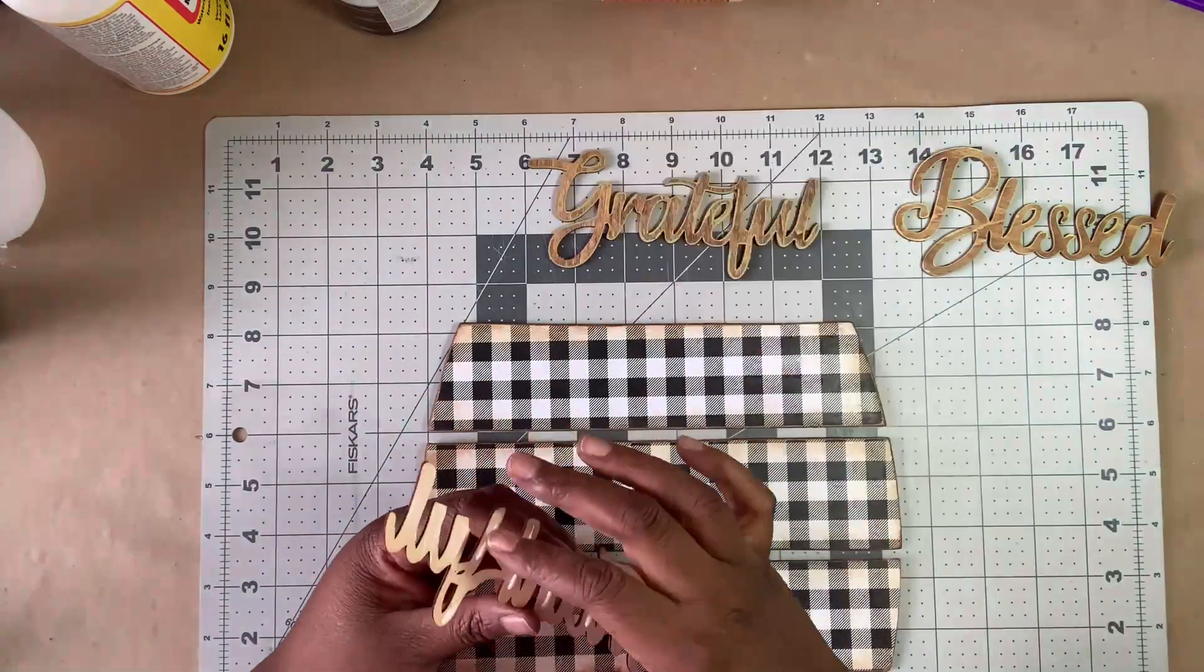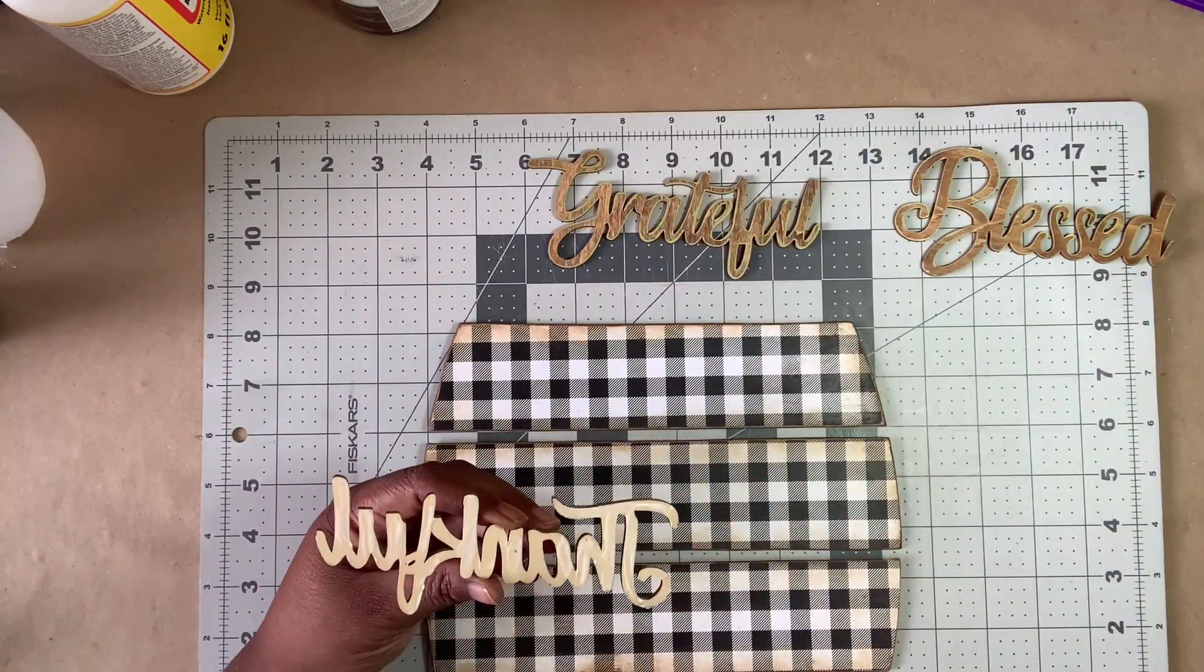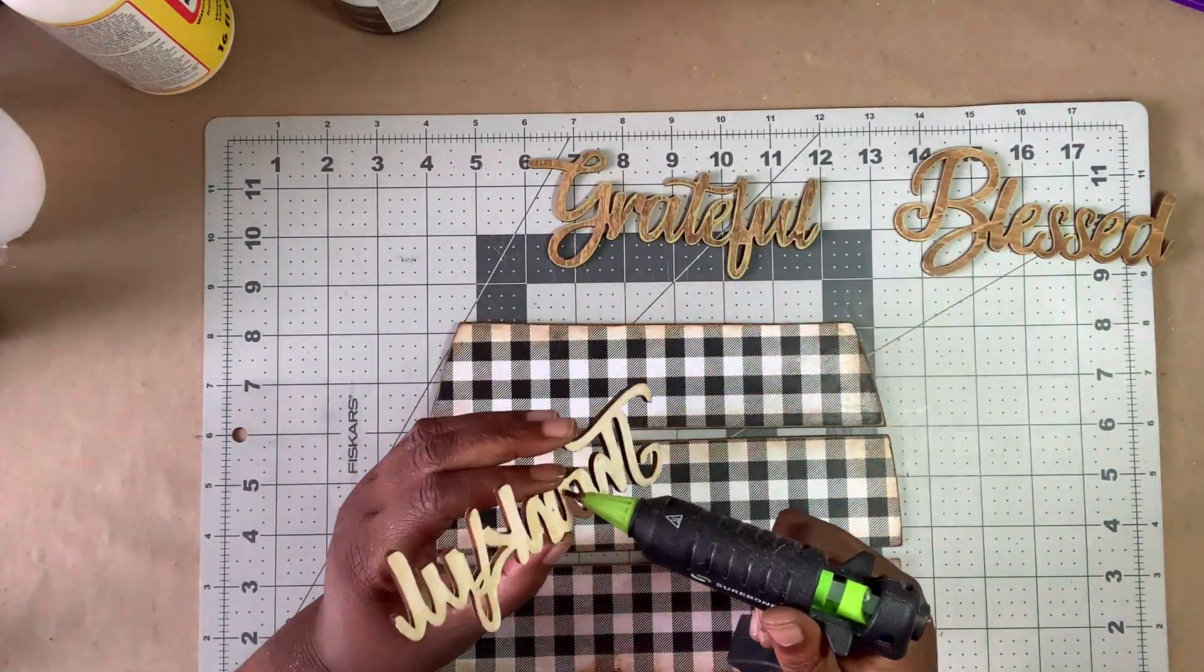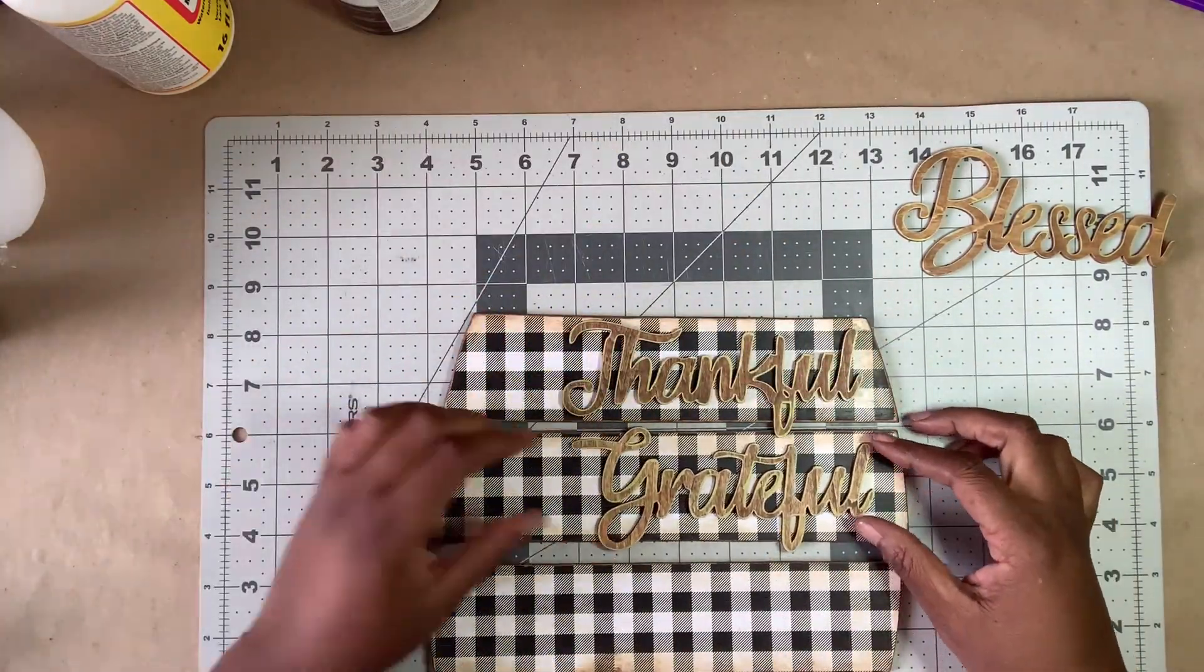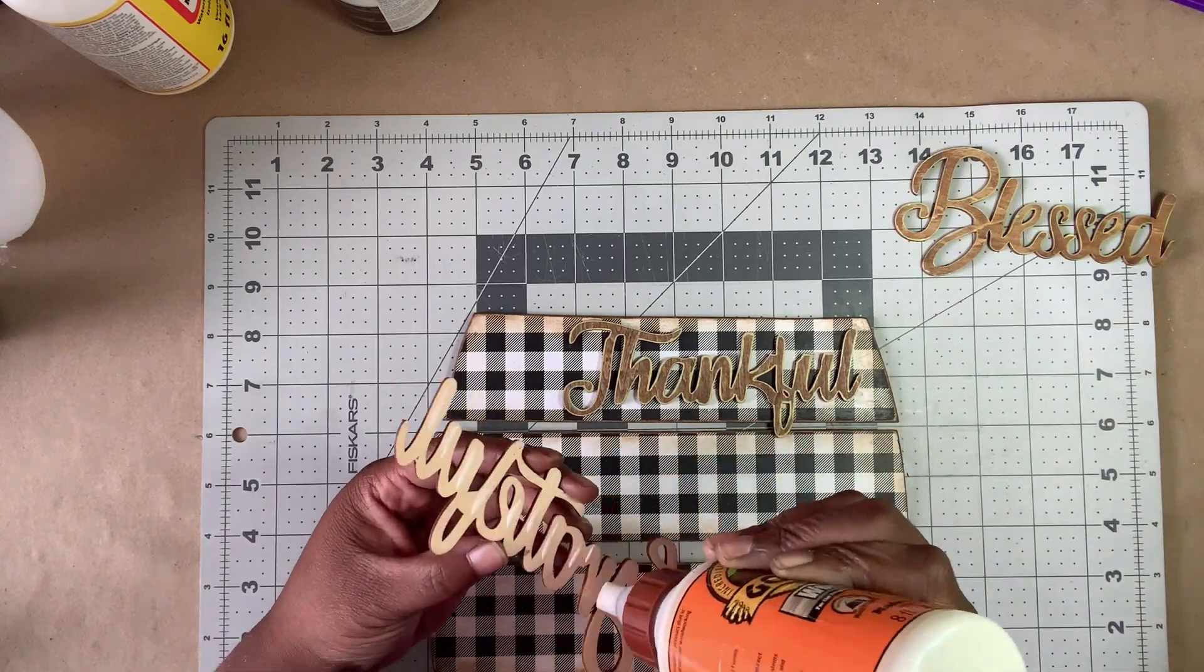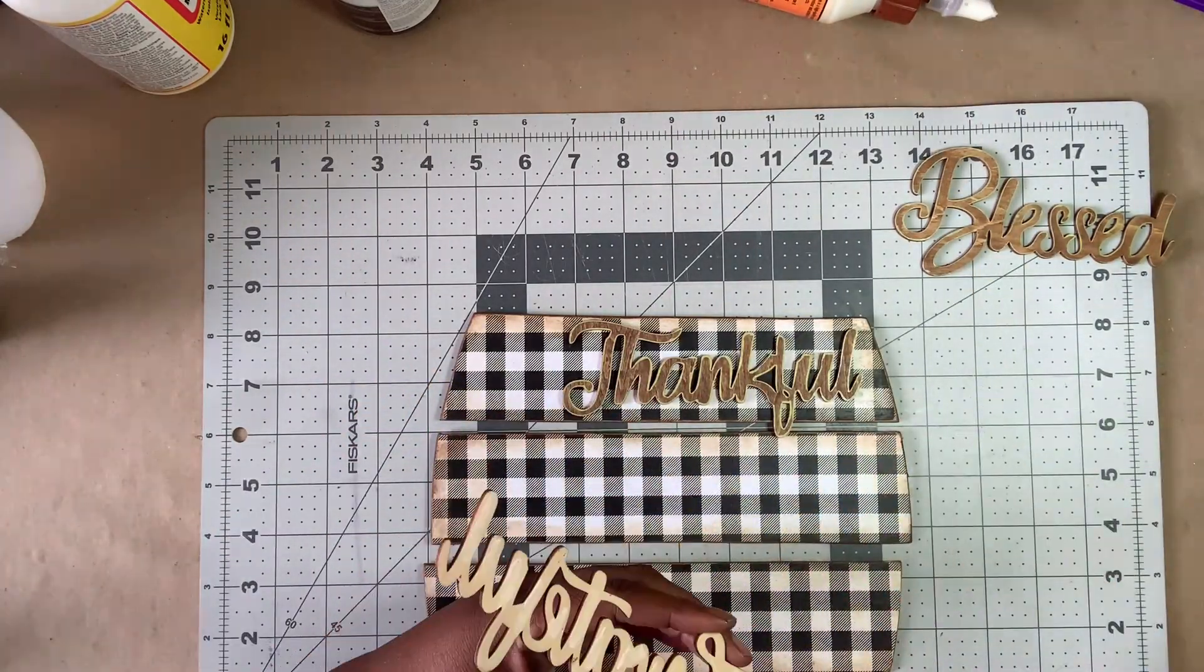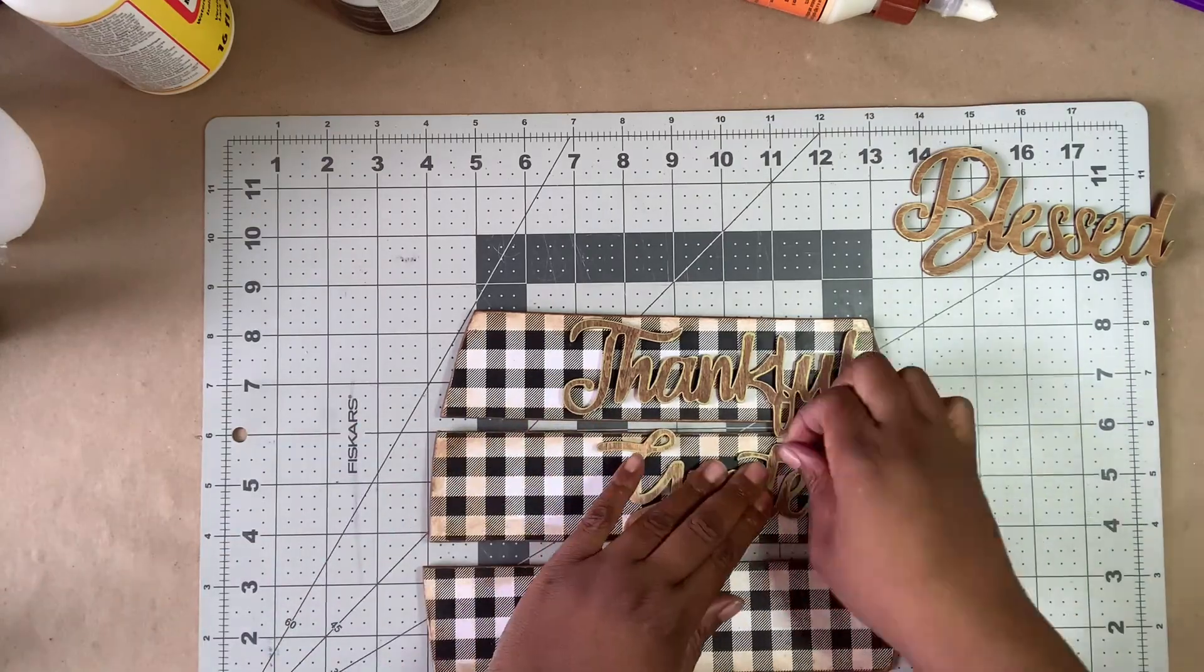Using a combination of wood glue and hot glue, I attached the words to the three center sections of the pumpkin. If you don't have these wooden words, you can use stickers, vinyl cutouts, or if you have great handwriting, you can simply write them on.